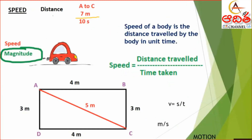Speed gives us only the magnitude. The speed of a body is the distance travelled by the body in unit time, and is mathematically written as distance travelled divided by time taken. The formula is V = S/T, where S is the distance and T is the total time taken. The unit is meter per second.